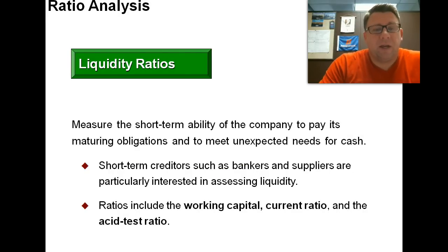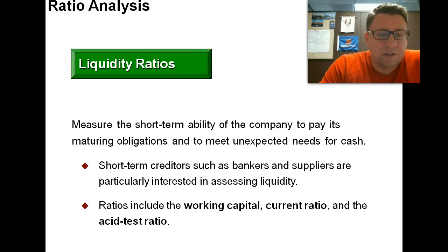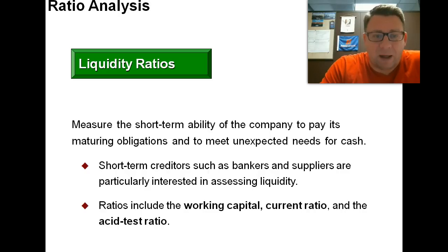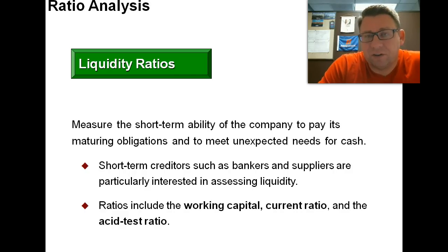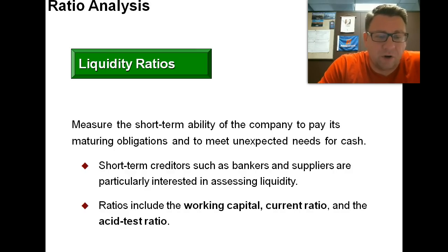The first group really relates to liquidity. Liquidity ratios measure the short-term ability of a company to meet its obligations and to meet unexpected needs for cash. Short-term creditors such as bankers and suppliers are particularly interested in assessing liquidity. The ratios we're going to focus on are working capital, the current ratio, and the acid test ratio.